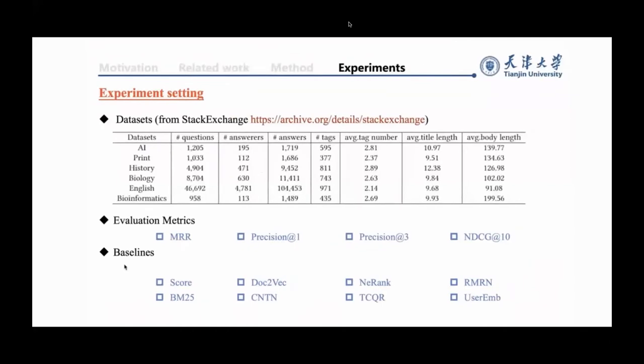In experiments, we select six real-world CQA datasets from Stack Exchange, which contains six domains: AI, Physics, History, Biology, English, and Bioinformatics. We split each dataset into a training set, a validation set, and a testing set with ratio 80%, 10%, 10% respectively, in chronological order.